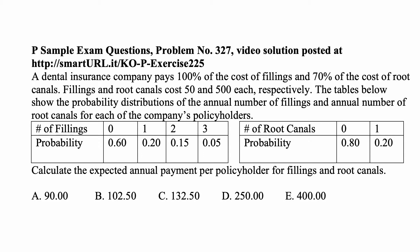Here's the problem for today for exam P on probability. A dental insurance company pays 100% of the cost of fillings and 70% of the cost of root canals. Fillings and root canals cost 50 and 500 each respectively. The tables below show the probability distribution of the annual number of fillings and annual number of root canals for each of the company's policyholders.